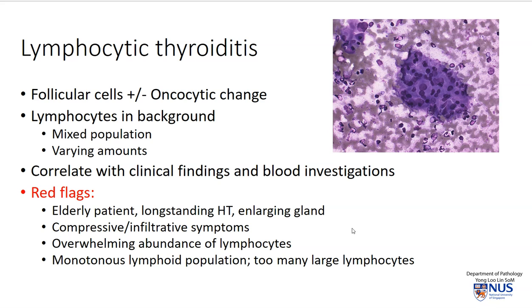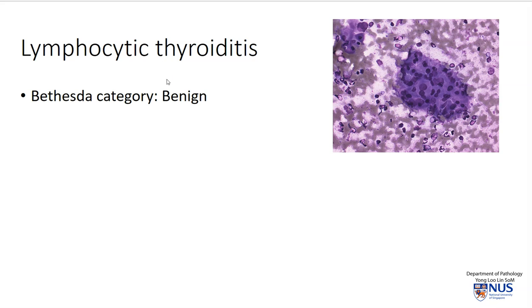These features may prompt us to make a diagnosis of atypical lymphoid population and categorize this in the AUS Bethesda category. If there are no red flag features either clinically or cytologically, lymphocytic thyroiditis would fall into the benign Bethesda category.